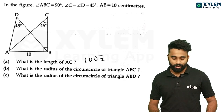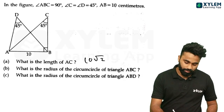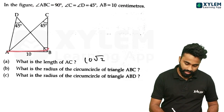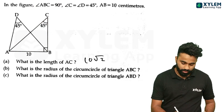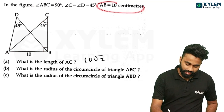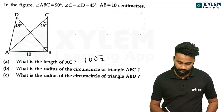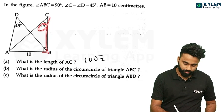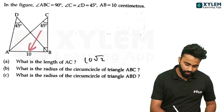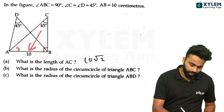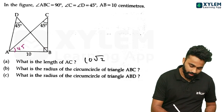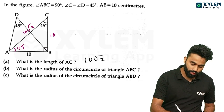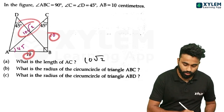In the figure, angle ABC equals 90 degrees, angle B is 80 degrees, and AB is 10. What is the length of AC? The angles are 45, 45, 45. This is a 45-45-90 triangle. 10 is the root. 1 is the root. 10 is the root.